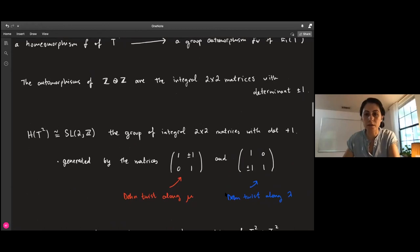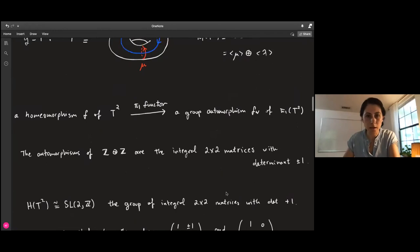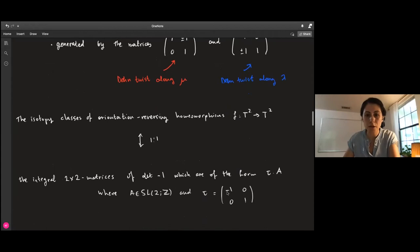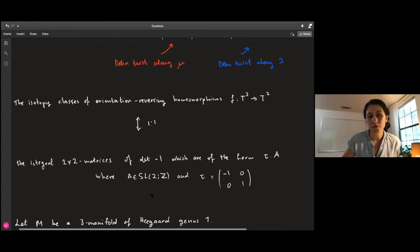To think about orientation reversing homeomorphisms, those are the ones with determinant negative 1. They're 2×2 matrices with integral entries and determinant -1. Any such matrix is of the form of a matrix in SL(2,Z) times this [-1,0;0,1] matrix, the matrix τ.